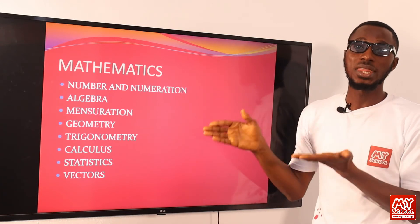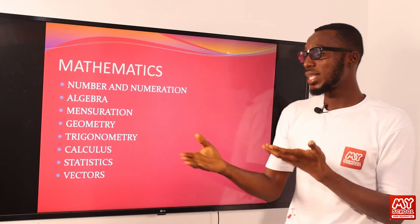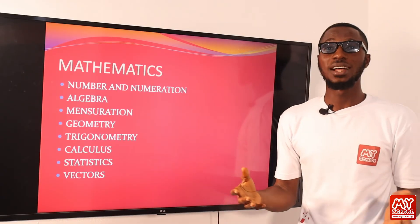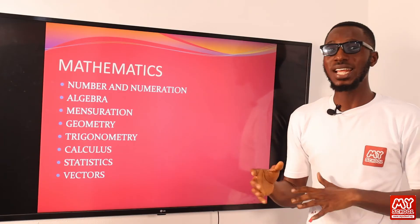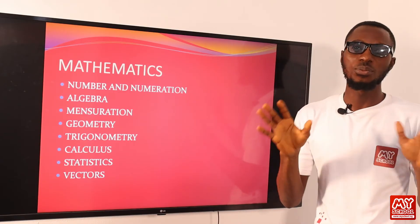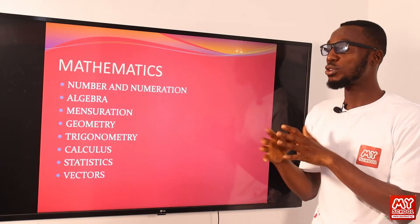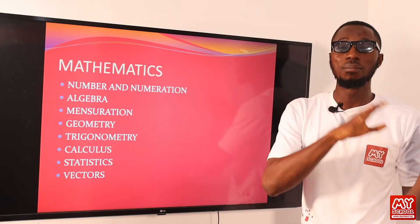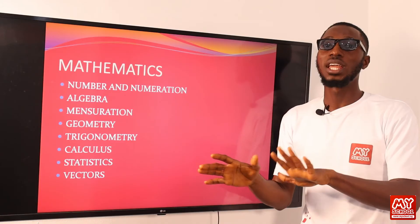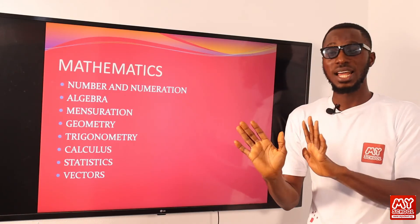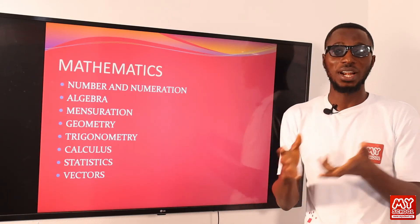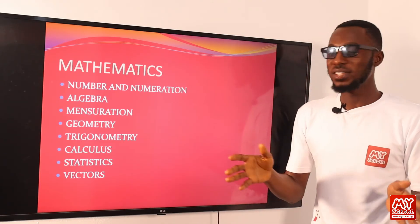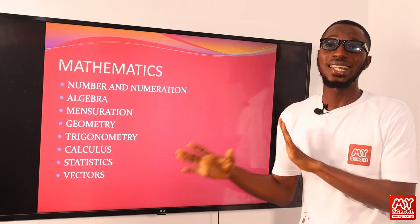Coming to statistics, we are looking at the representation of data using histograms, bar charts, pie charts, and more. We'll look at measures of location and dispersion — your mean, median, and mode — for both grouped and ungrouped data. We'll cover how to determine class mark, class boundary, and class interval, as well as variance and standard deviation.